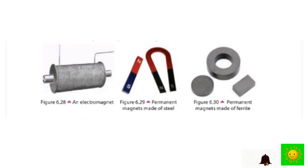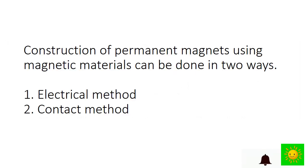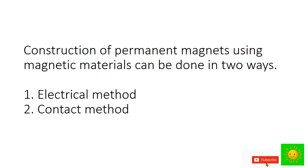You can see an electromagnet, a permanent magnet made of steel, and permanent magnets made of ferrite. Construction of permanent magnets using magnetic materials can be done in two ways: the electrical method and the contact method.